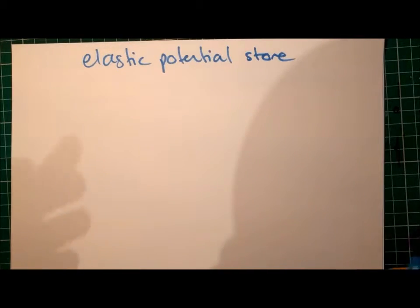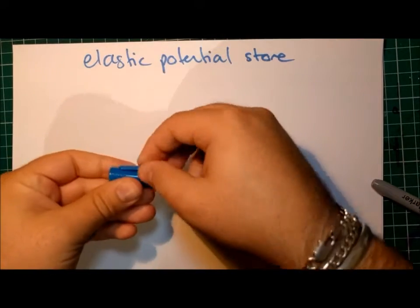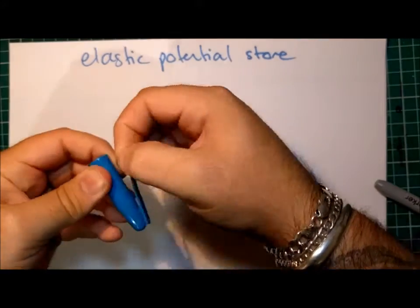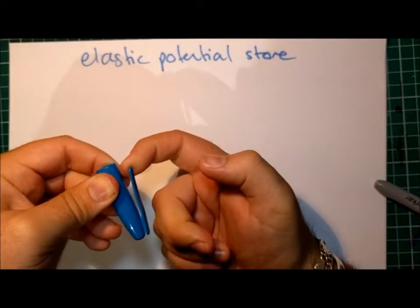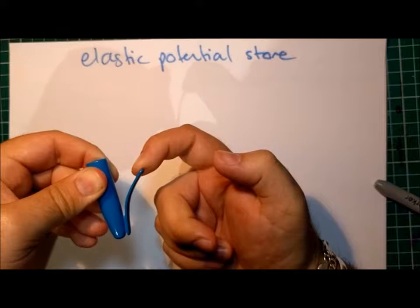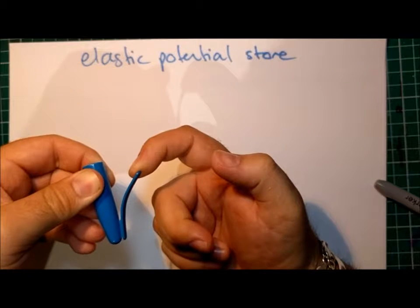The Elastic Potential Store is where energy is stored by the deformation, that's the change in shape, or the stretching, which is really also the change in shape of an object. So, for instance, if I was to take this pen lid here, as I pull the little flippy bit on the side out of shape, then I'm adding energy to its Elastic Potential Store.